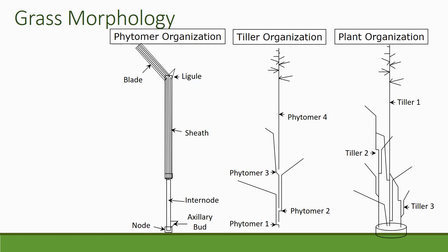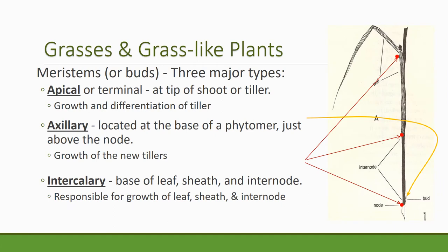Phytomers are just stacked up in the plant to create a tiller — one right on top of another. If you have several tillers or individual stalks, then you have a grass plant. Here again is a phytomer: we've got a leaf, a sheath that goes around the stem, an internode, two nodes, and the axillary bud — that yellow line is pointing to the axillary bud right above the internode. It's the part of the plant that could create a new stem or a new tiller. Intercalary buds are right at the base of the leaf, sheath, and internode, and those intercalary meristems cause expansion of the leaf, sheath, and internode.